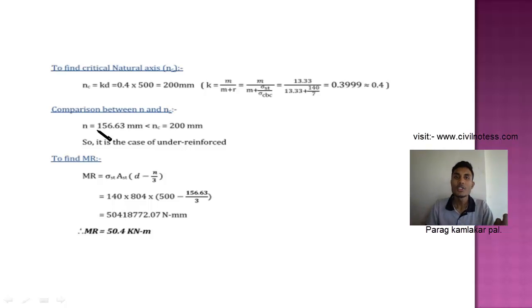Now we are comparing the depth of neutral axis and the critical depth of neutral axis. When we are comparing both, we got that N equals 156.63 mm is lesser than the critical depth of the neutral axis. So our beam is an under-reinforced section. So the determination of the moment of resistance MR for under-reinforced section is given by this formula: MR equals Sigma ST into AST into D minus N by 3.